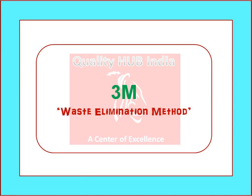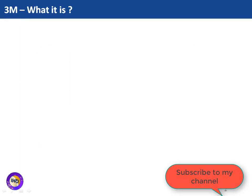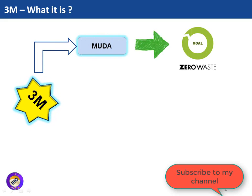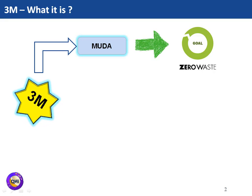Hello friends, today in this session we are going to learn about what is 3M and how it is going to help any organization in removing all unnecessary activities and waste from the systems, and how to enhance the productivity and efficiency of the process. So what is 3M? It comprises three words, each starting with M — these are Japanese ways of waste identification.